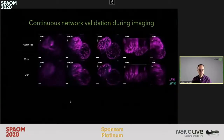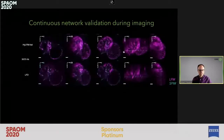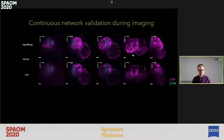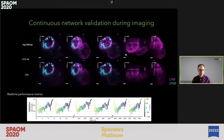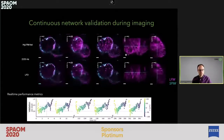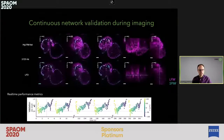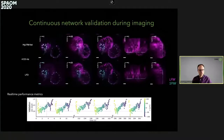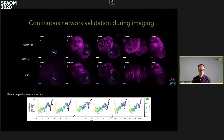A video shows how a single light sheet volume sweeps through the volume while we are acquiring data with LFM. This gives us the capability to also check online in real time how well our reconstructions compare to individual slices — enabling online validation of our neural networks.